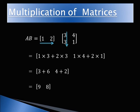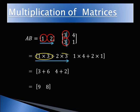First row multiplied with first column: the first entry is multiplied with the first entry — 1 multiplied by 3. The second entry is multiplied with the second entry — 2 multiplied by 3.